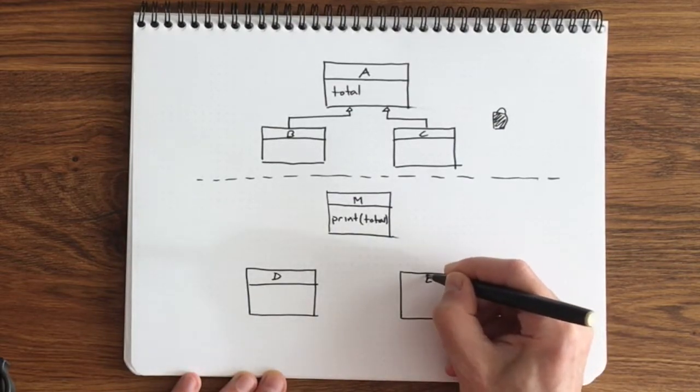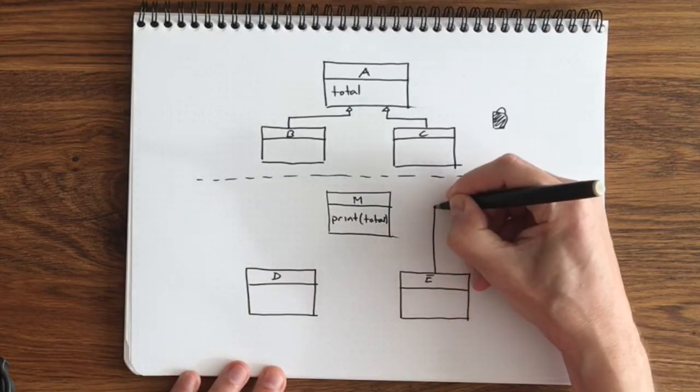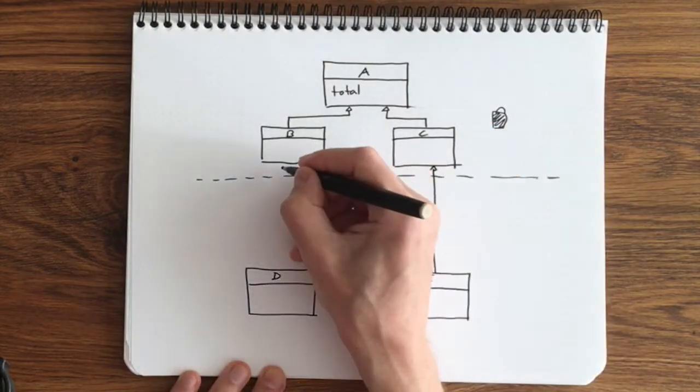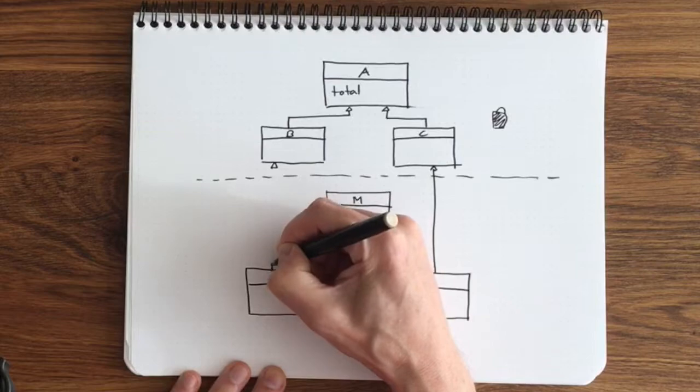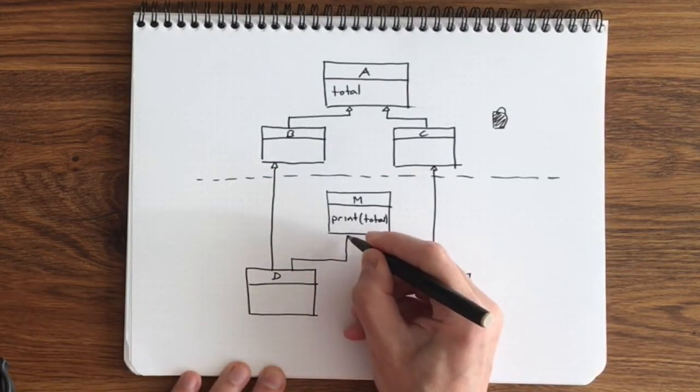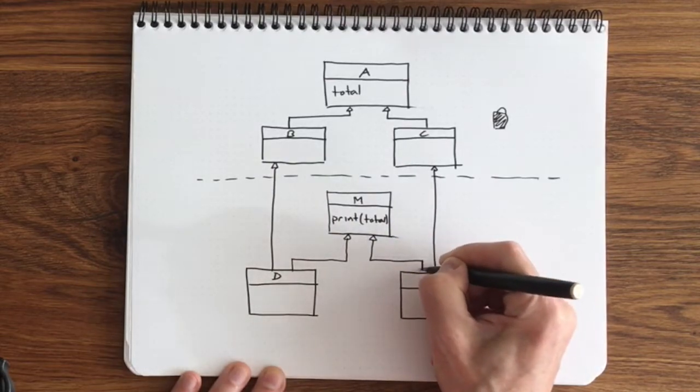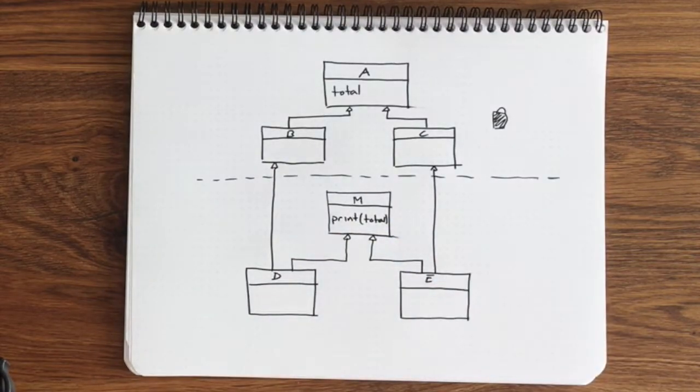The way we do this is to create new classes D and E where D inherits from B and E inherits from C, but D and E both also inherit from M. Classes D and E, although they are different, both now have access to the total property and to the printTotal function.